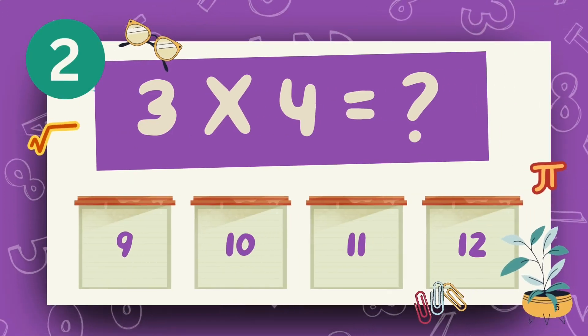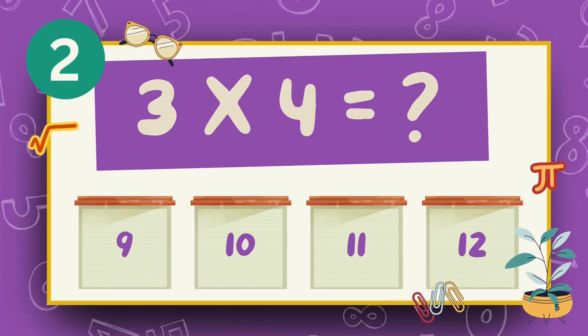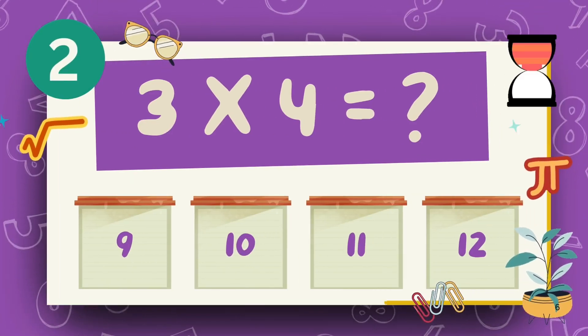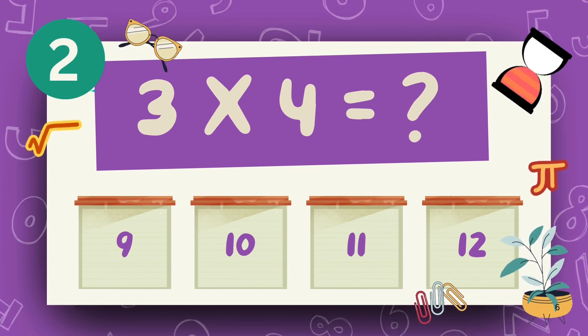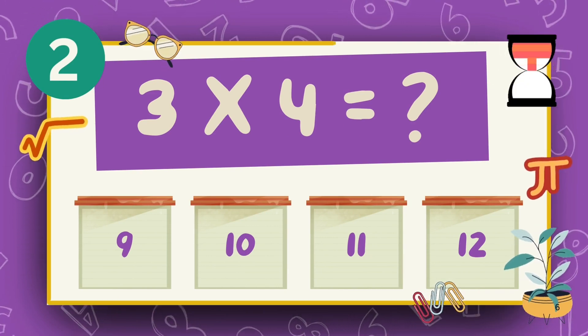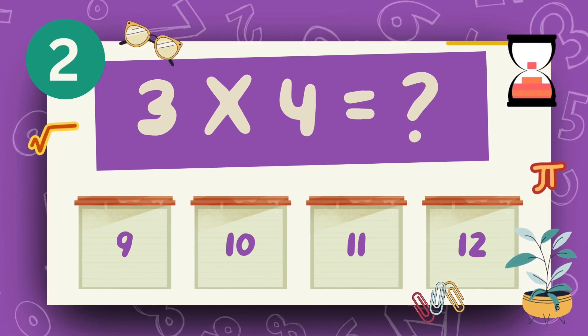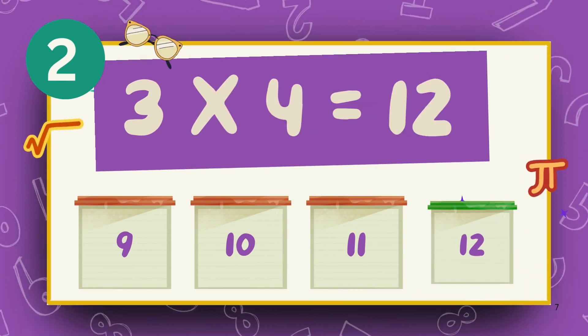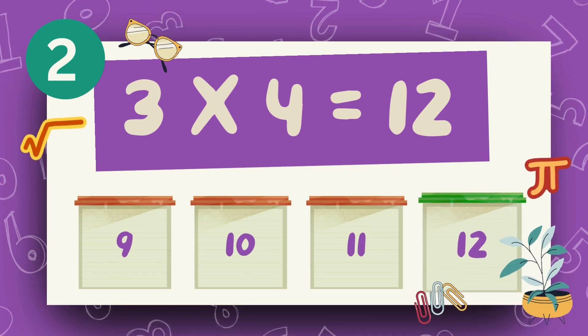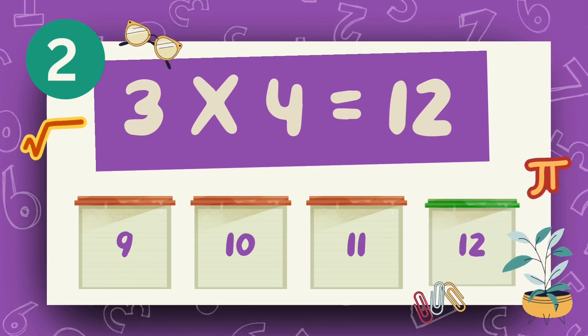What does 3 multiply 4? The answer is 12.